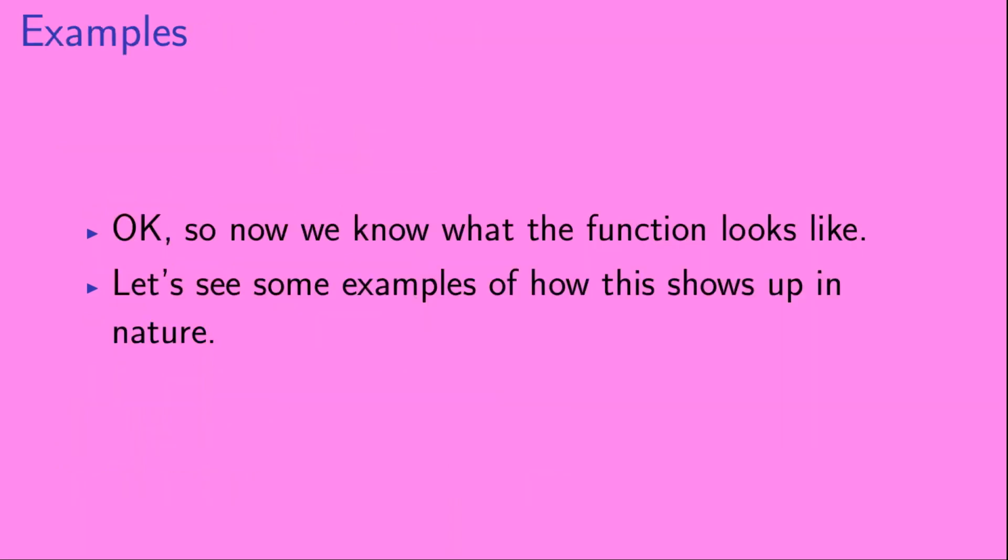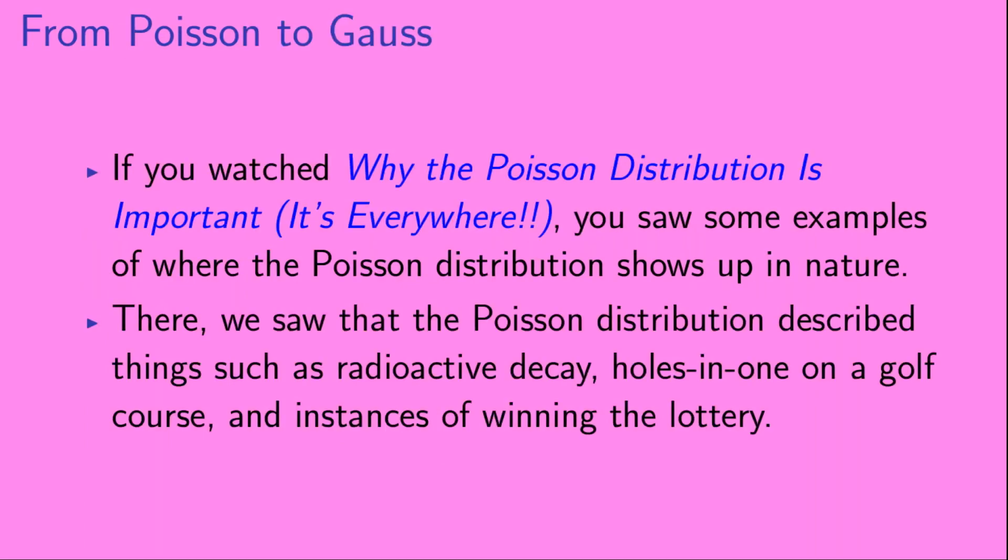Okay, so now we know what the function looks like. Let's see some examples of how this shows up in nature. If you watched the video, Why the Poisson Distribution is Important, it's Everywhere, you saw some examples of where the Poisson distribution shows up in nature. There, we saw that the Poisson distribution described things such as radioactive decay, holes in one on a golf course, and instances of winning the lottery.